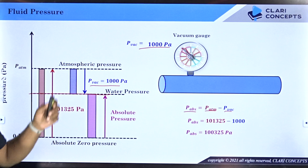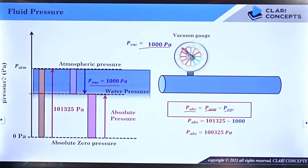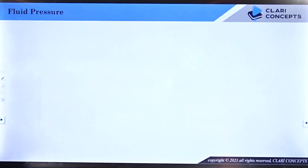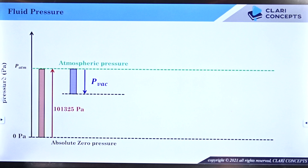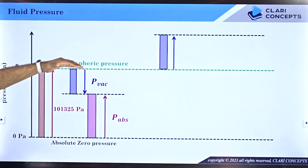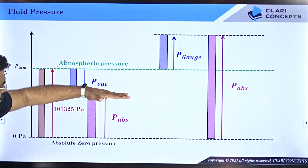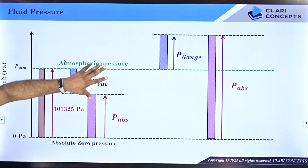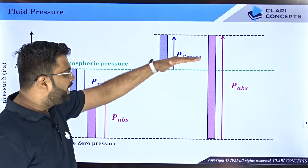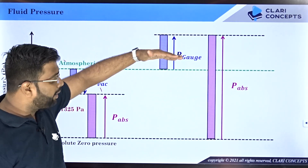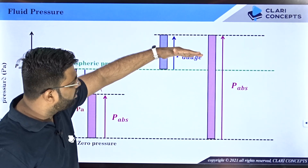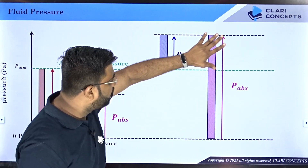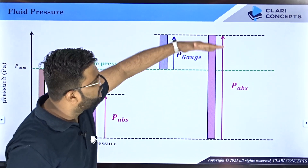That is why vacuum and gauge pressure came into existence. Vacuum pressures are normally used to measure pressure below atmospheric pressures. Now this is the final chart — the atmospheric pressure line is here. Vacuum pressure is always measured below atmosphere, and if you want the absolute pressure of that, you subtract vacuum pressure from atmospheric. Gauge pressure is measured above the atmospheric pressure line, and if you want the absolute value, you add atmospheric value with the gauge pressure.